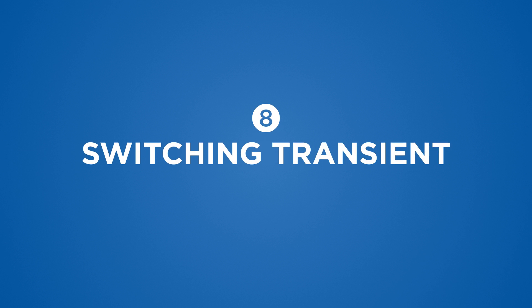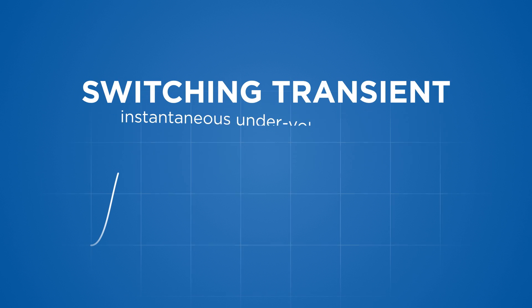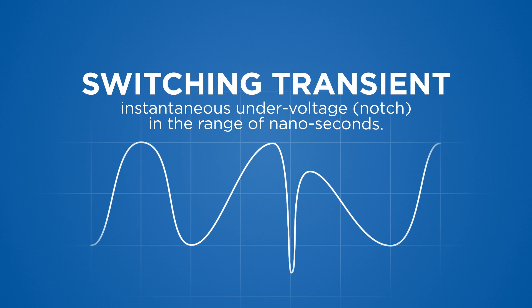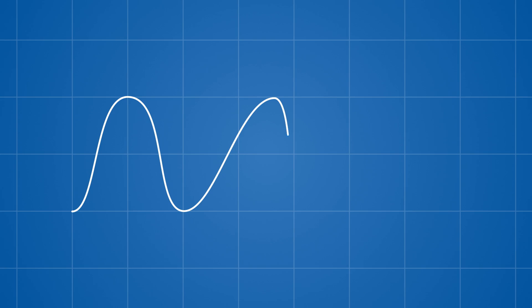Switching transient is an instantaneous under voltage or notch in the range of nanoseconds. With a switching transient power problem, the normal duration is shorter than a spike and generally falls in the range of nanoseconds.